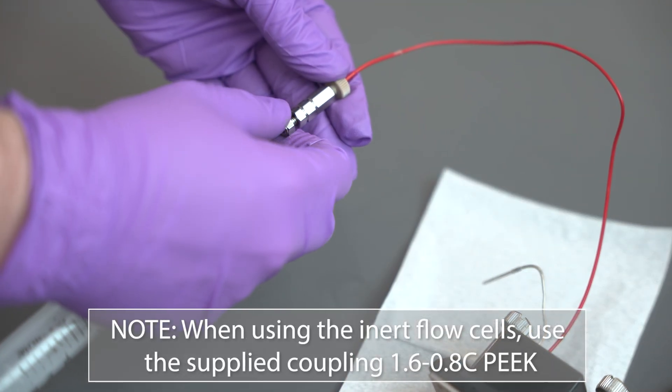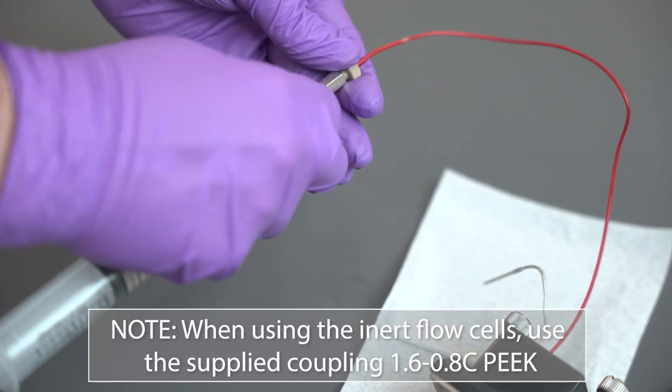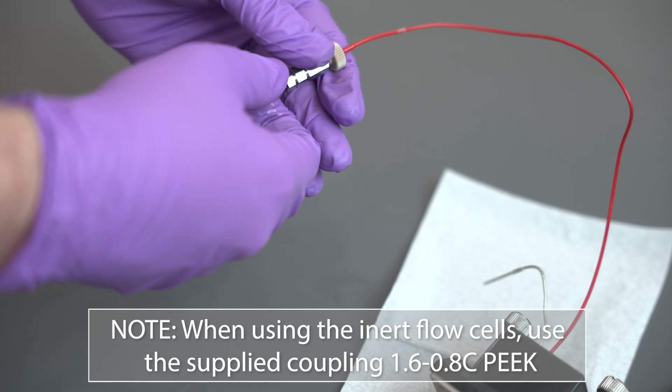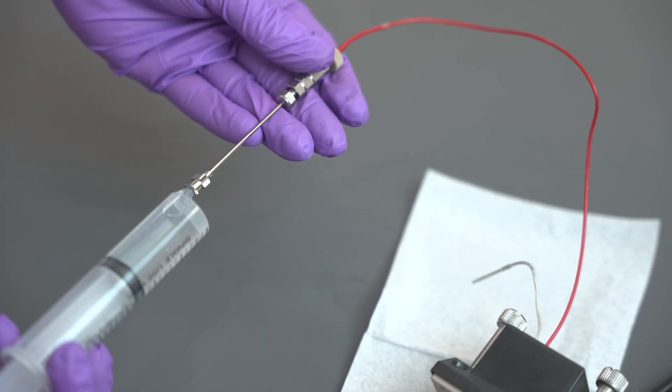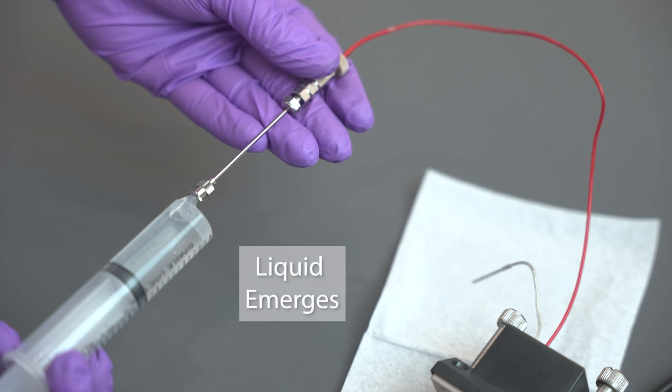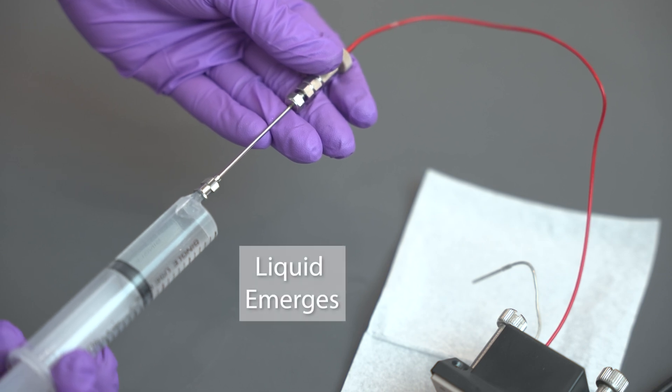When using the inert flow cells, use the supplied coupling 1.6-0.8c peak. Push 2-propanol through the flow cell slowly until you see liquid emerging from the outlet tubing.